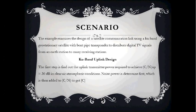In this KU-band scenario, the example examines the design of a satellite communication link using a KU-band geostationary satellite with a bent-pipe transponder to distribute digital TV signals from an Earth station to many receiving stations. For the KU-band uplink design, the first step is to find the uplink transmitter power required to achieve the C/N ratio of 30 dB in clear air atmospheric conditions. Noise power is determined first, which is then added to C/N to get the value of C.